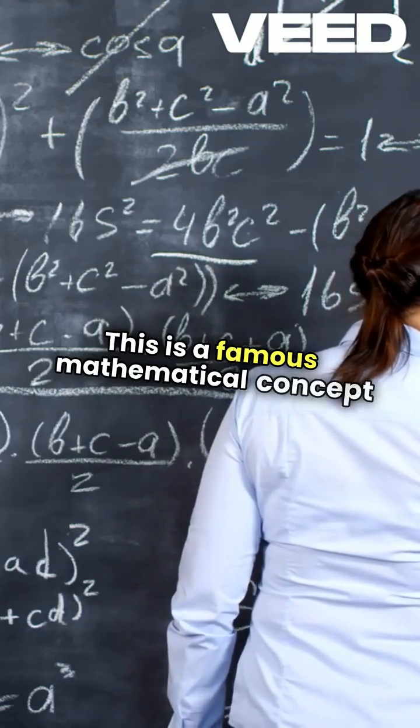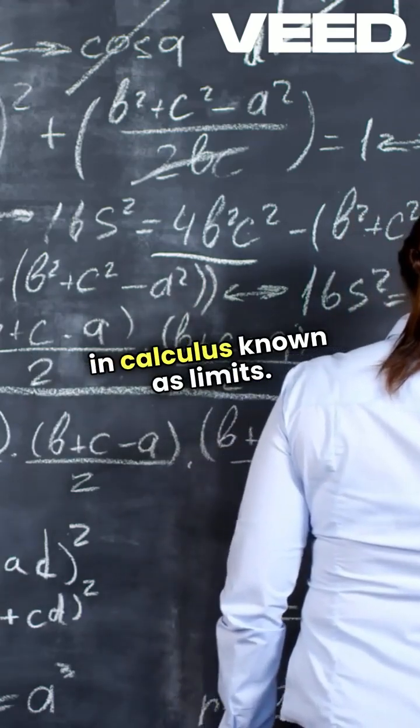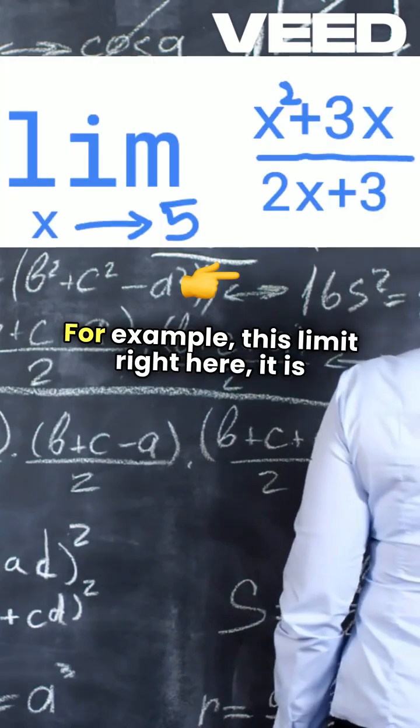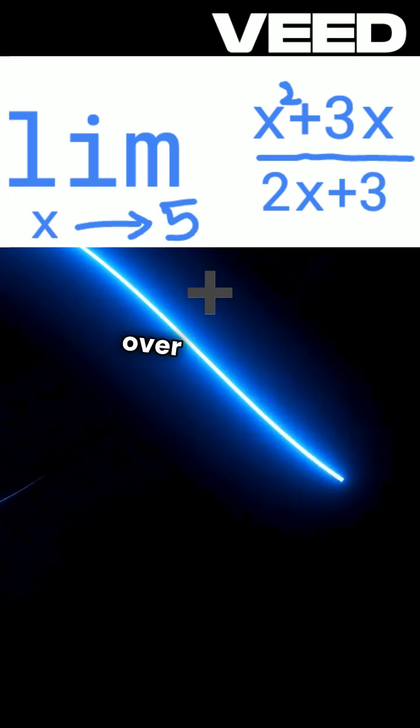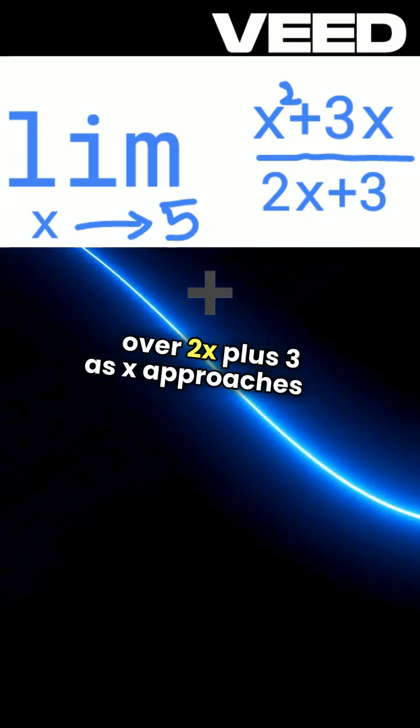This is a famous mathematical concept in calculus known as limits. For example, this limit right here. It is interpreted as the limit of the function x squared plus 3x all over 2x plus 3 as x approaches 5.